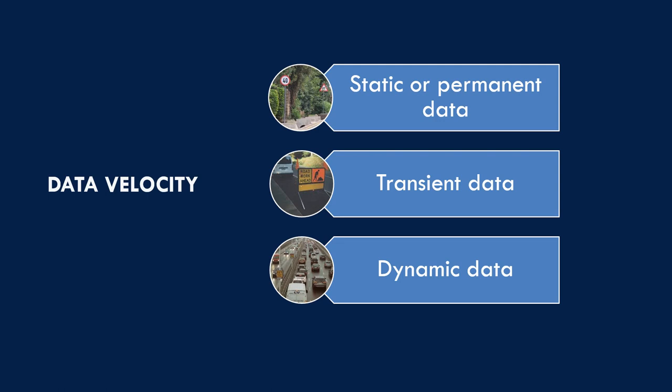Data change in specific ways. Data velocity — a term from the big data definition — is a good example. We must deal with static data, transient data, and dynamic data if we want to solve complex transportation problems. In the ideal case, all data types work together for complex applications.